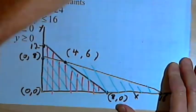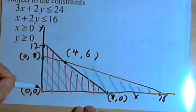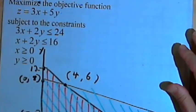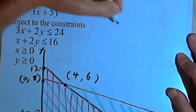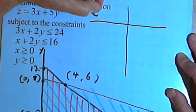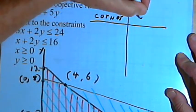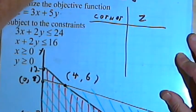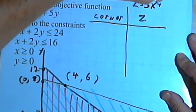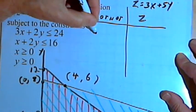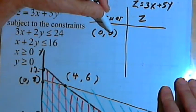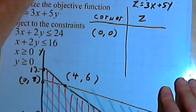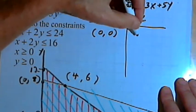Now we're ready to find out which of these corner points will give us the maximum value for z. In other words, we're ready to maximize the objective function. So I'm going to make a rough table where I list the corners and what z equals. Let's remember that z equals 3x plus 5y. My first corner is 0, 0. This means x is 0 and y is 0. If I plug those two zeros into my objective function, I get z equal to 0.